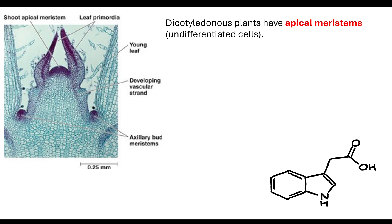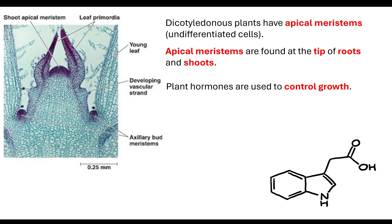That means they have the capacity to go through mitotic division and differentiate. This brings us back to module 2, our cell division topic area. These apical meristems are found at the tip of the roots and at the tip of the shoots in dicotyledonous plants. Plant hormones are used to control growth.